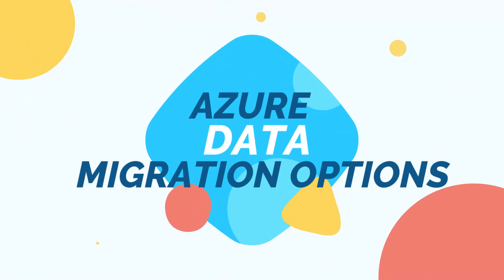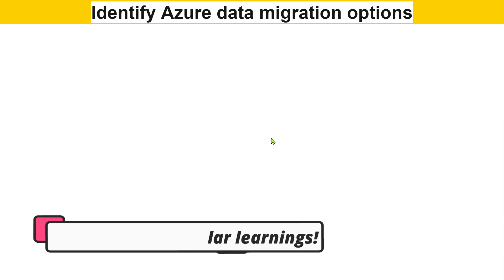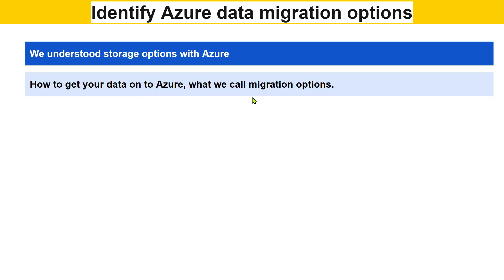Our next topic is Azure data migration options. So what is data migration? So far we have learned about all different storage options like Azure Blob, and in the last exercise we created one. Now the question is: how can I transfer my data which is in my on-premise data center to Azure? I have my data locally available — how do I move it to cloud? This is what we call migration — transferring your data from locally available data to the Azure cloud.